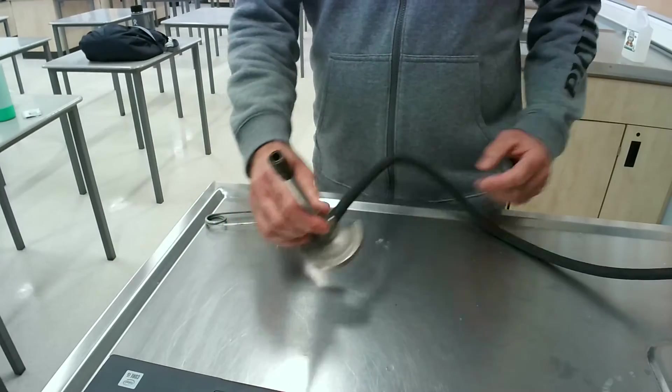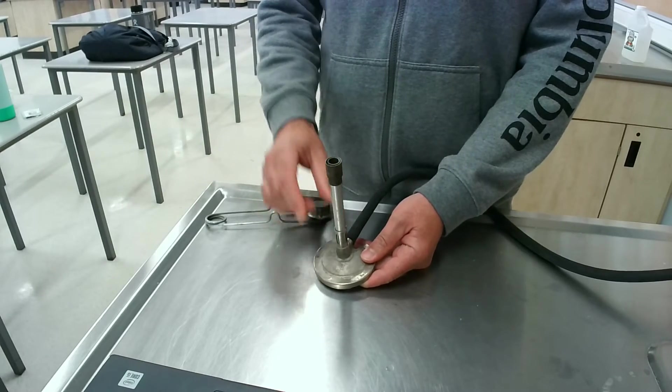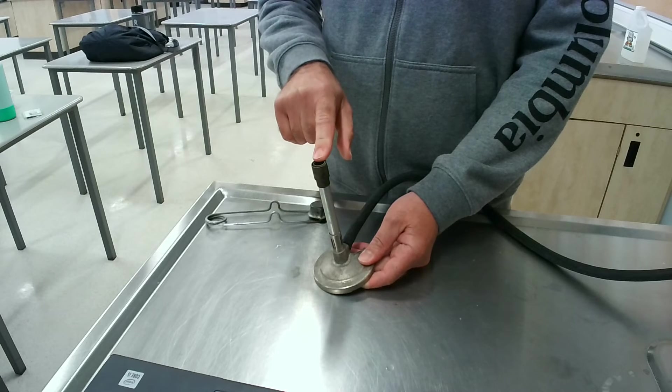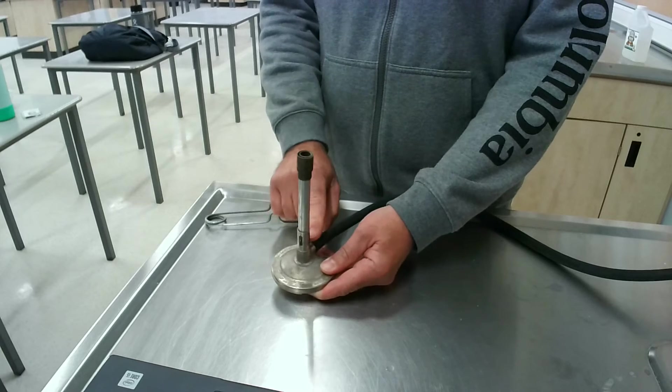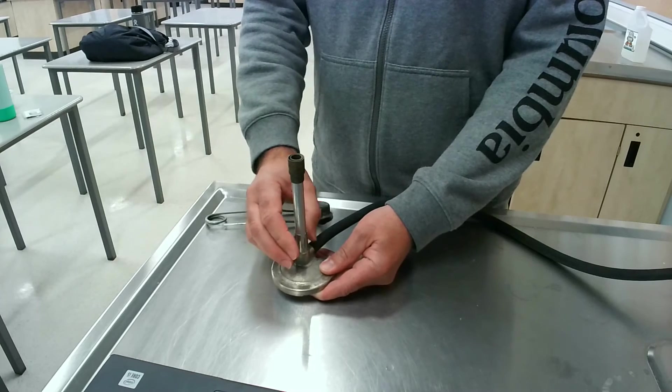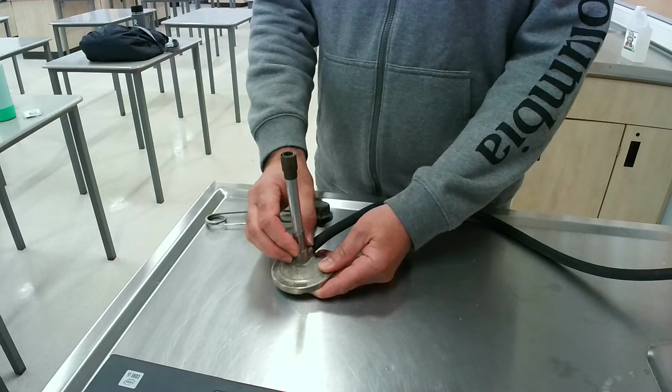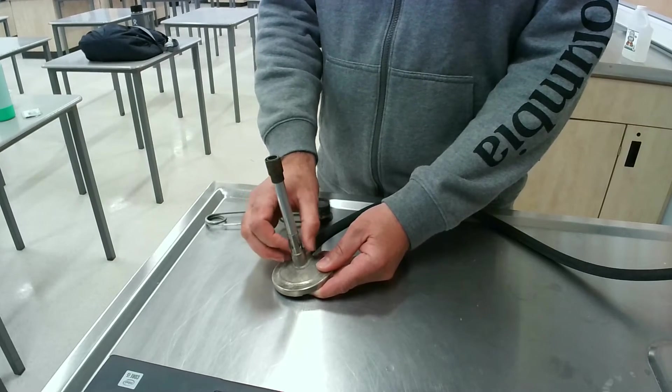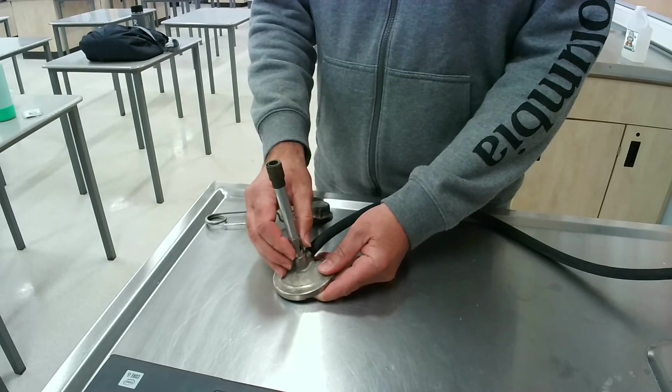This is the Bunsen burner. The gas, the methane, which is basically natural gas, comes out the top. We're going to light the gas, but it doesn't burn very well without oxygen. So at the bottom here, there's an adjustable opening that allows oxygen in to help the flame and the combustion.